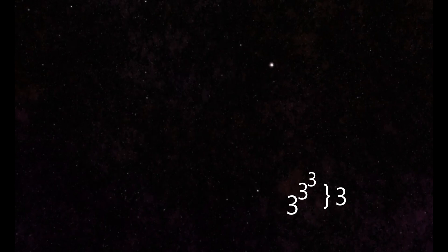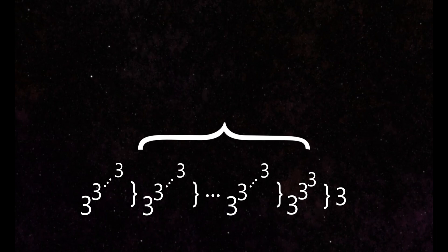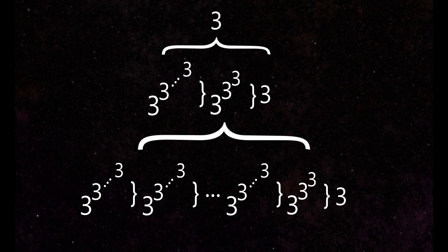2 arrows, a single vertical stack. 3 arrows, a horizontal row of stacks. 4 arrows, a stack of rows of stacks. And this pattern continues.